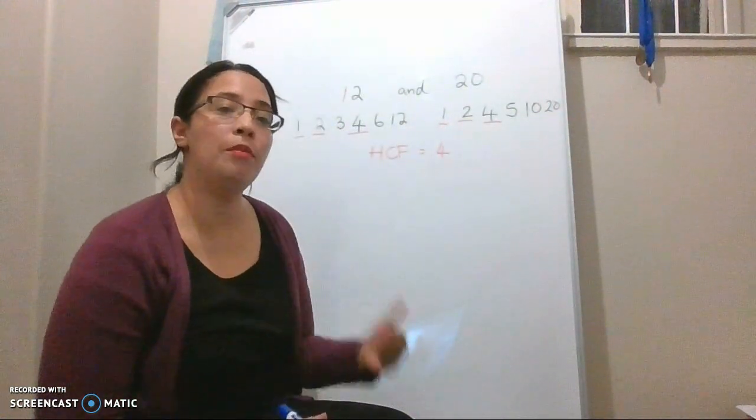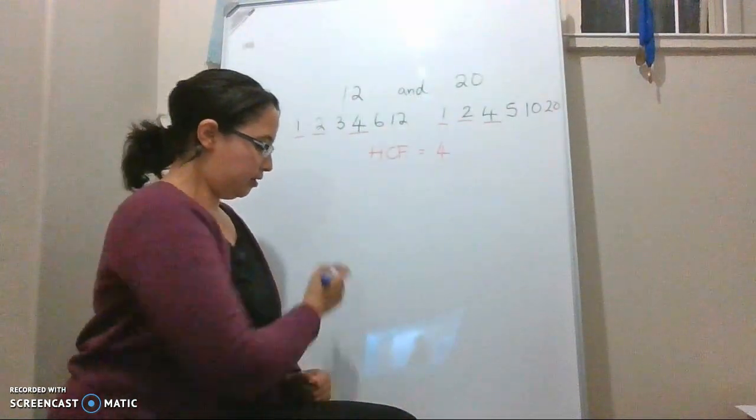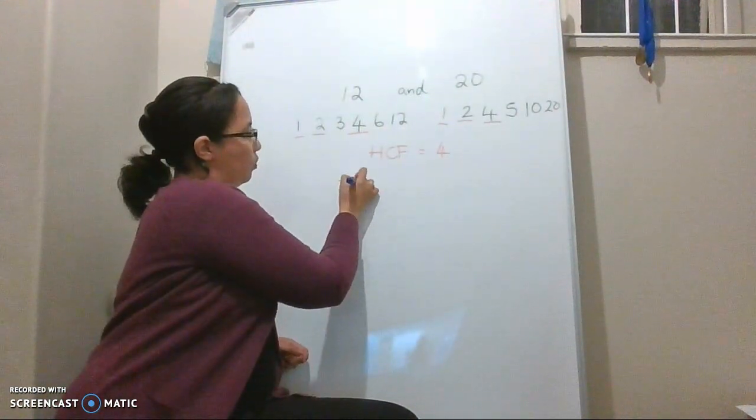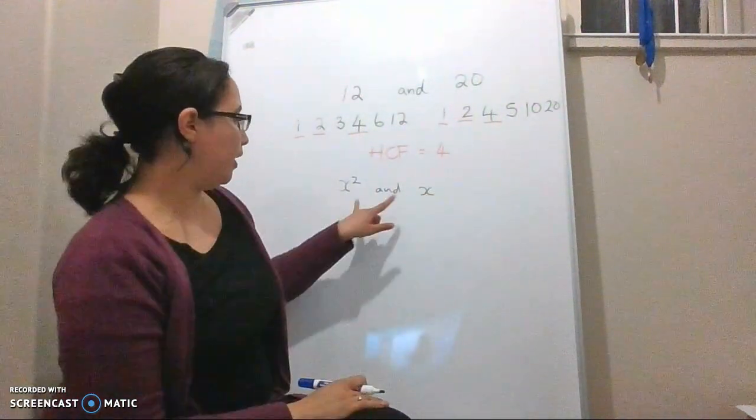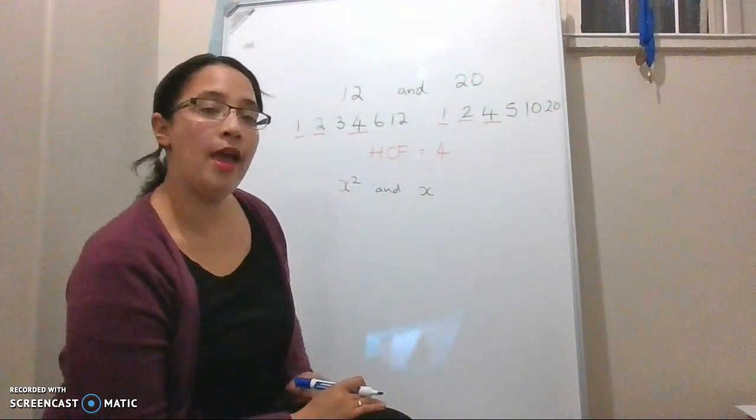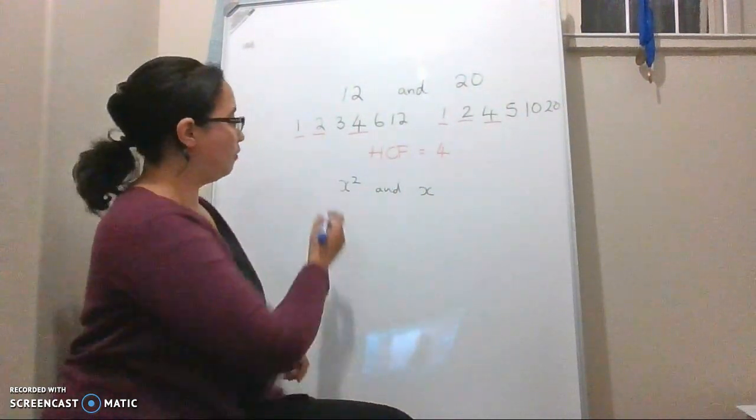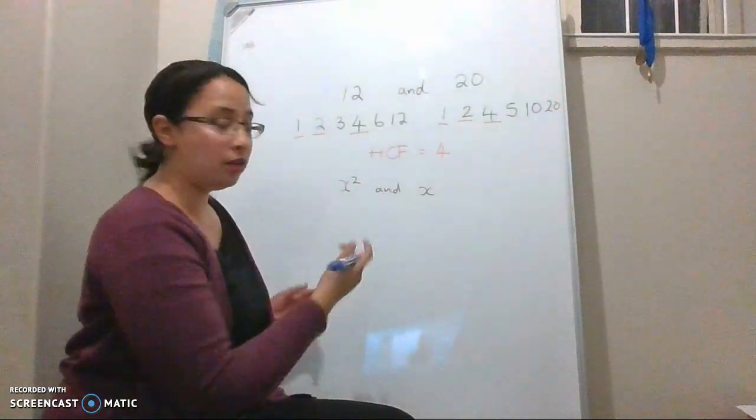Now, we can also look at common factors of algebraic expressions. So if I write down x² and x, then I can compare these two terms, and I can see that both of them have factors of x. If I write this out in expanded form,